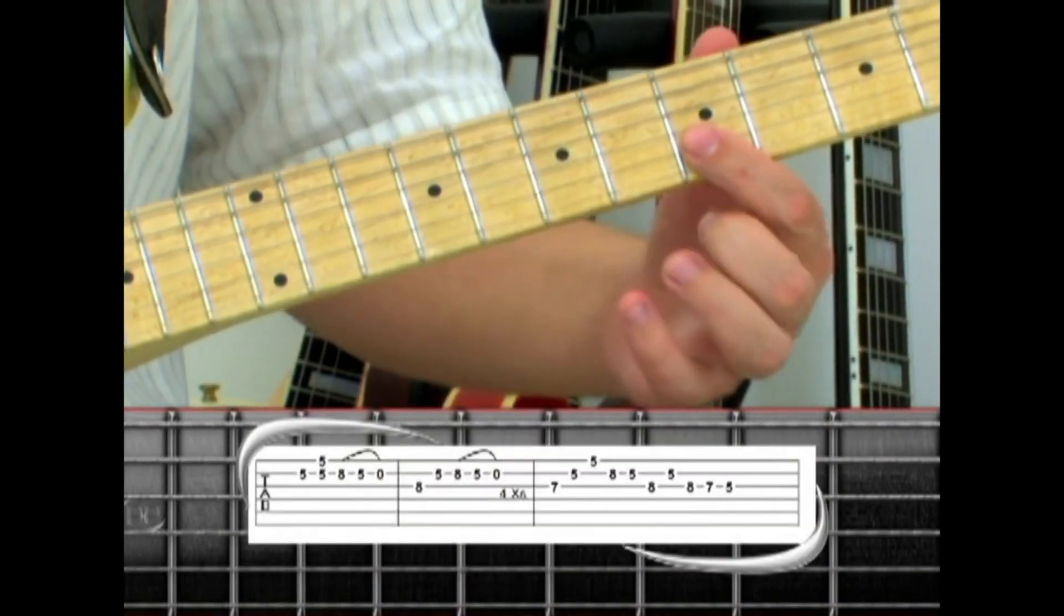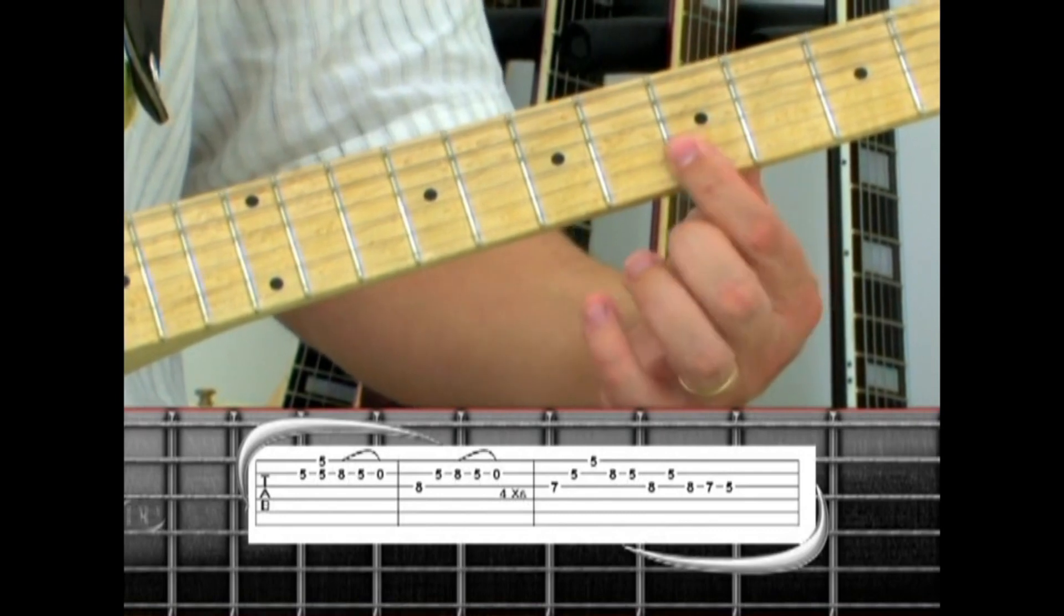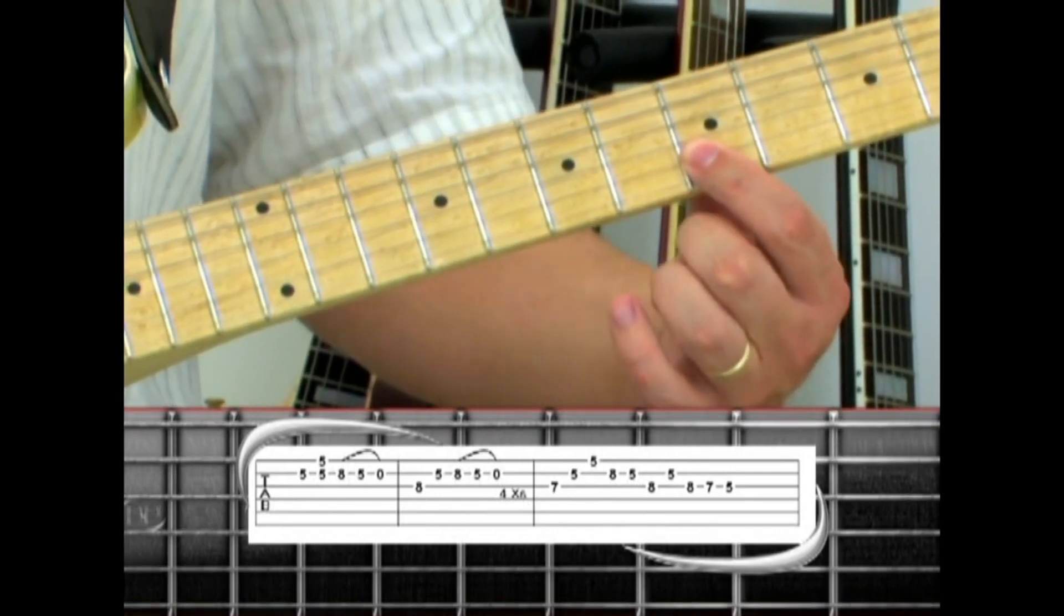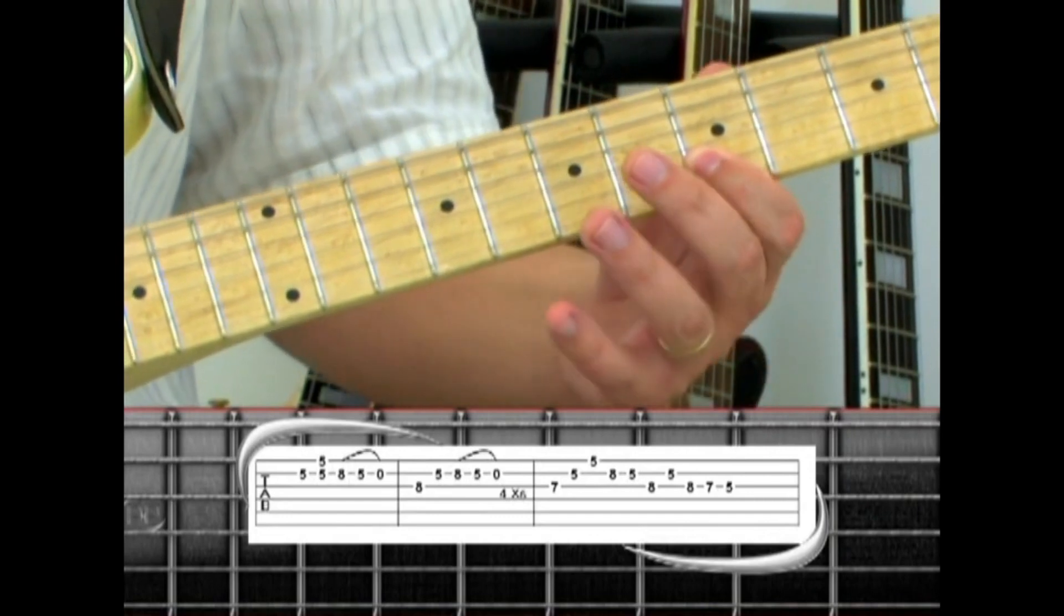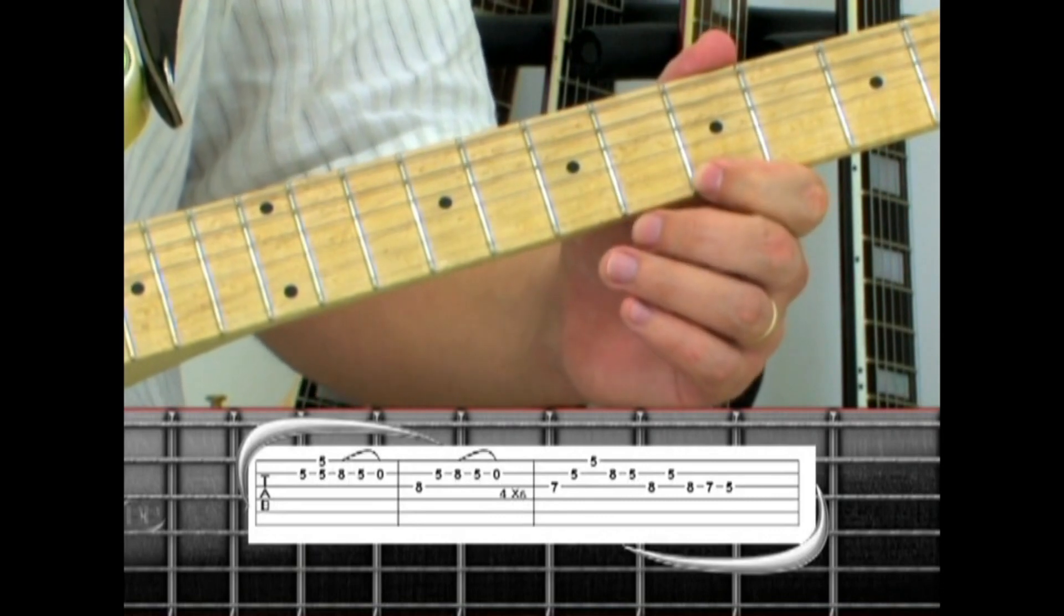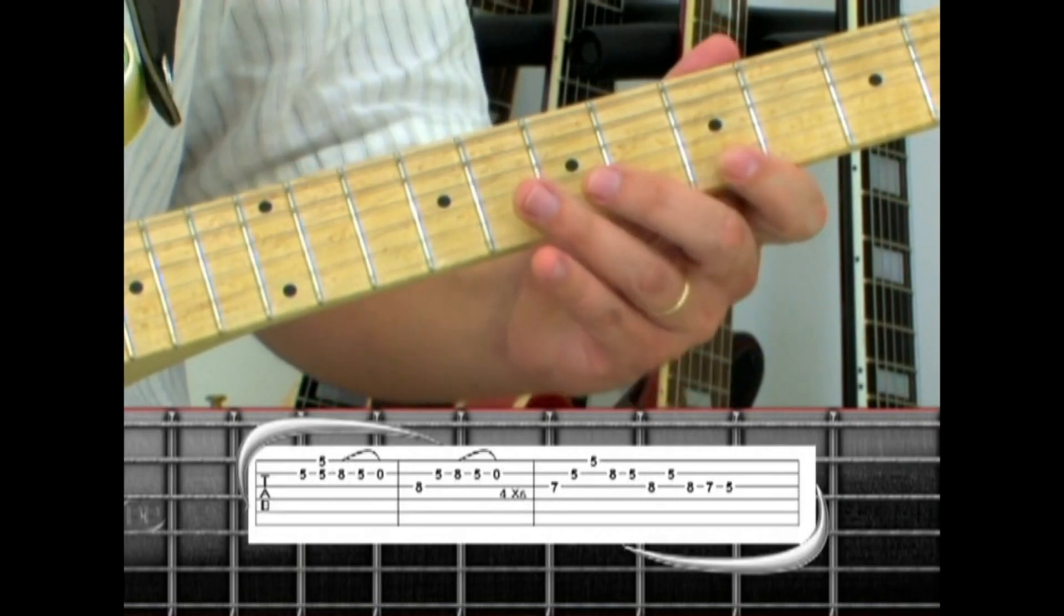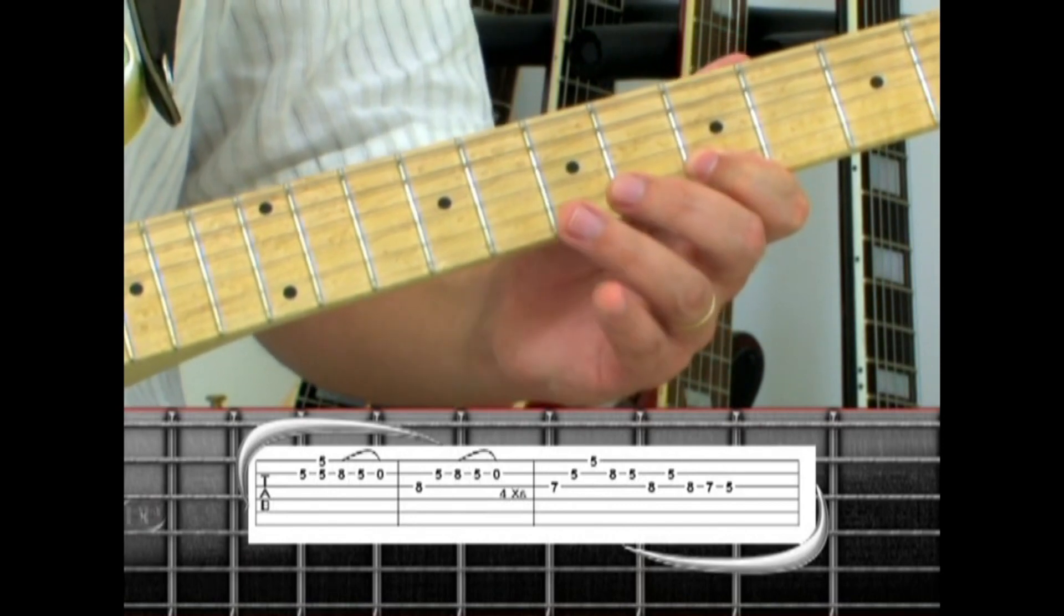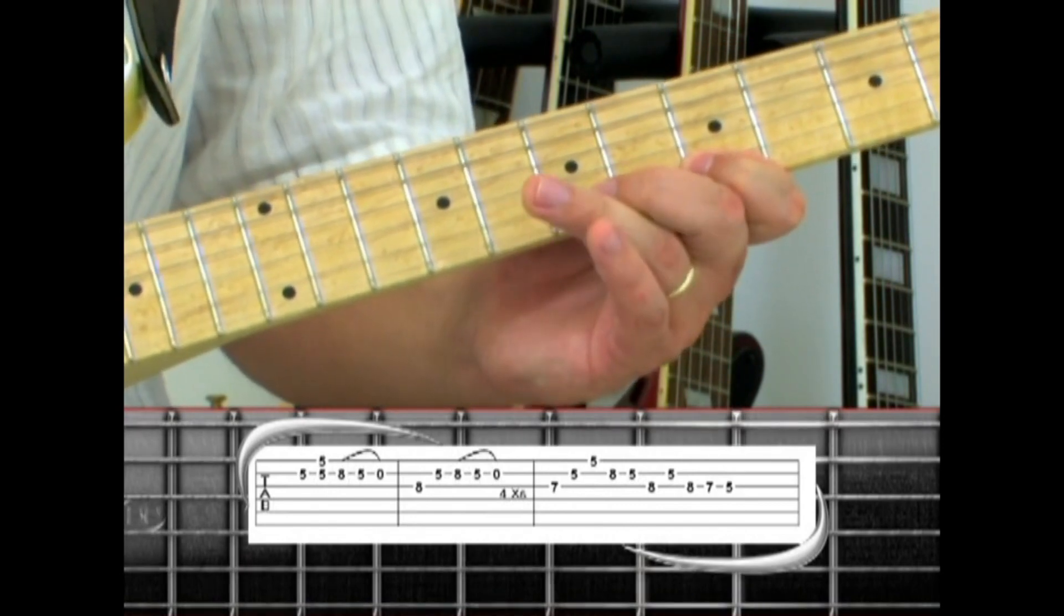Use your index finger to bar the fifth fret in phrase two. Play the second string, then first and second string together, ring finger on the second string eight, pull to five, pull to open. Next, play the third string eight to second string five, hammer to eight, pull to five, pull to open.